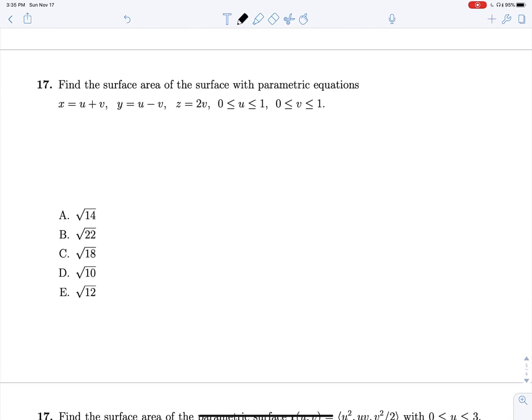We're finding the surface area of this surface with these parametric equations. Yet again, all we need to do is do RU cross RV, and we can form R of U and V from these guys. This is just going to be U plus V, U minus V, 2V. And so RU is going to be 1, 1, 0, whereas RV is going to be 1, negative 1, 2.